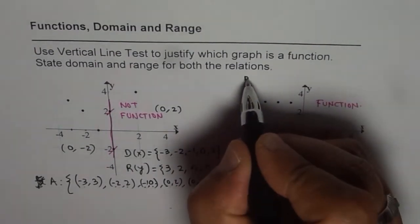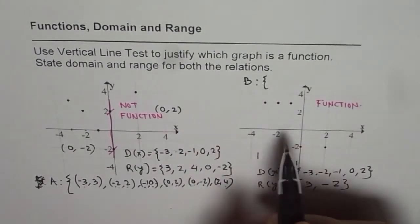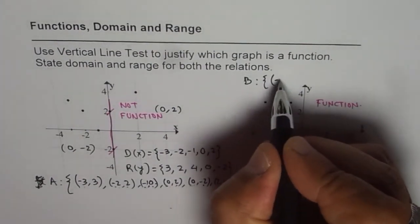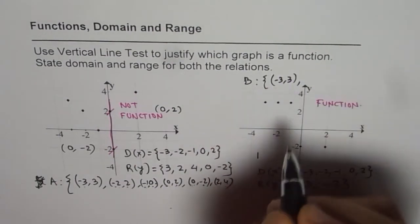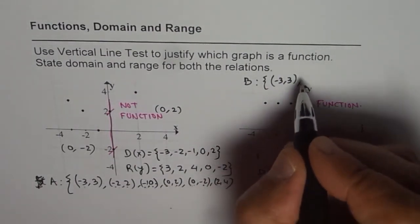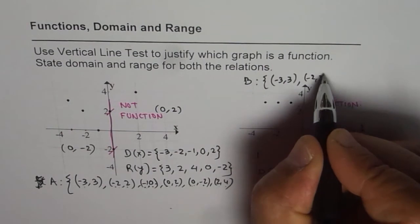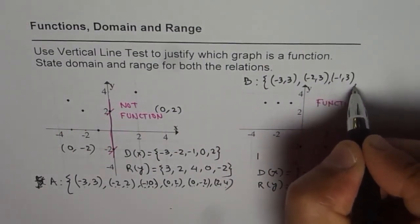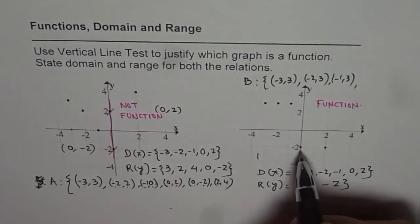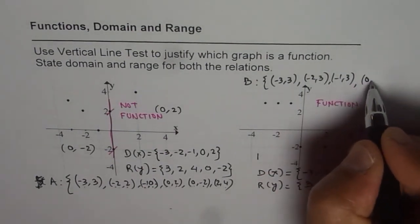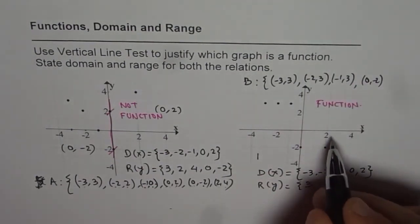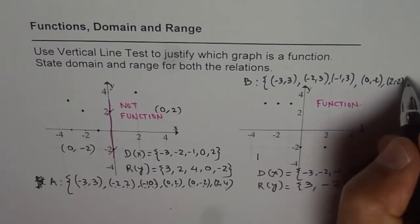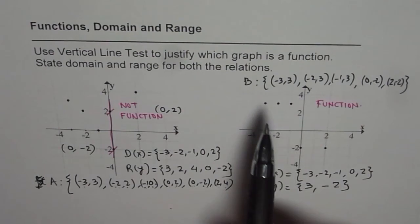And set B is coordinate points: (-3, 3), (-2, 3), (-1, 3), (0, -2), and (2, -2). So that is relation B.